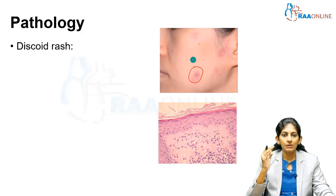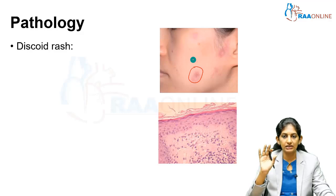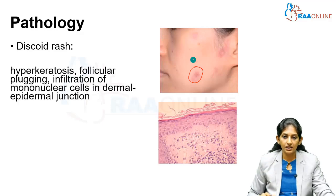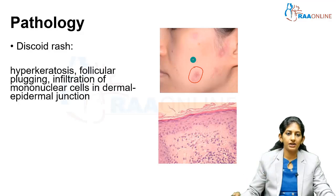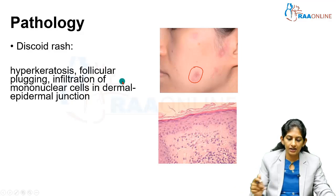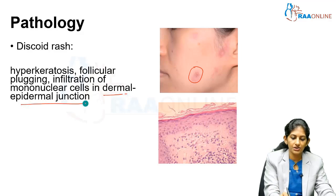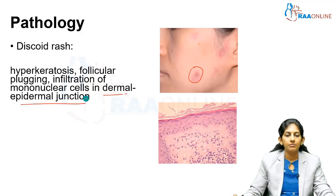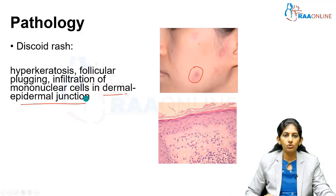It is an erythematous, sometimes scaly, non-pruritic lesion present over the face and scalp. Discoid rash biopsy shows hyperkeratosis, follicular plugging, and at the dermal-epidermal junction, many mononuclear cells — monocytes and macrophages — infiltration is seen.